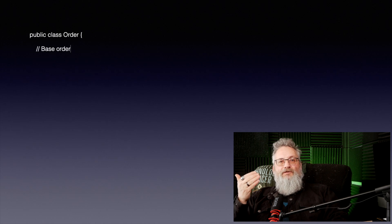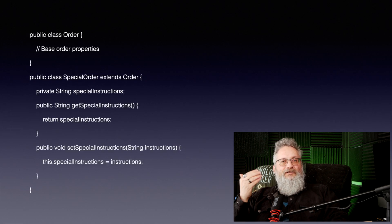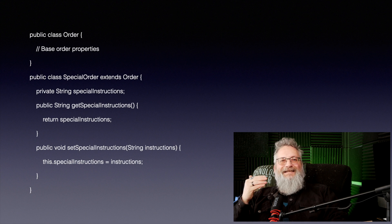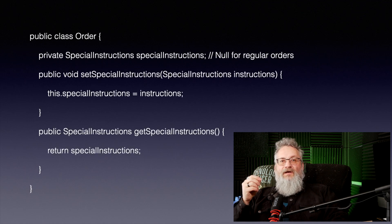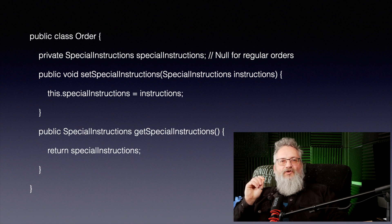The most common solution is to move the field to a more relevant place. For example, in the Order class, we could create a specialized subclass or use composition. Solution one: subclassing. By moving special instructions into a subclass, we isolate it to orders that actually need it, keeping the base Order class clean and focused. Solution two: composition. By moving special instructions into its own class, we've made it crystal clear — this field isn't relevant to every order.